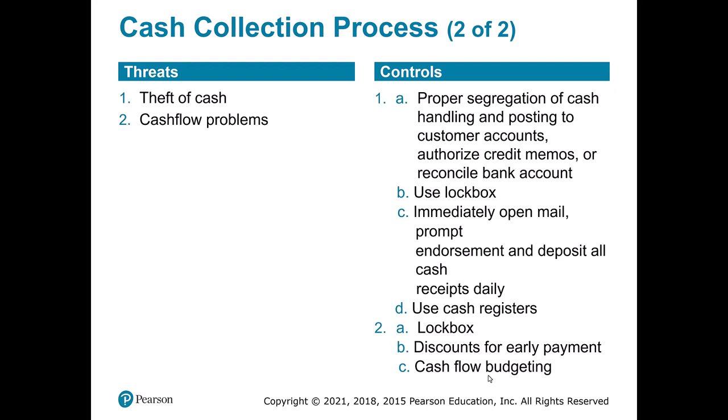Cash collection controls include segregation — when opening envelopes from customers, have two people present: one deposits the cash, the other updates the accounting system with the remittance advice. Lock boxes allow payments to go directly to the bank so we don't even handle them. We also use endorsement stamps on checks as soon as they arrive, offer discounts for early payment to speed up collection, and use cash flow budgeting to forecast when cash comes in and goes out.